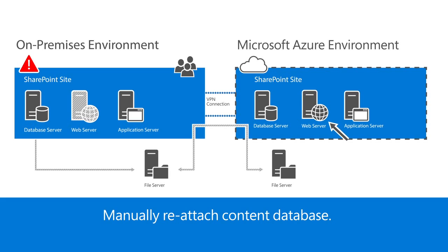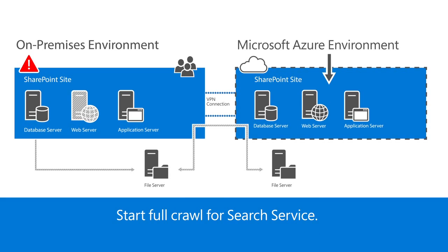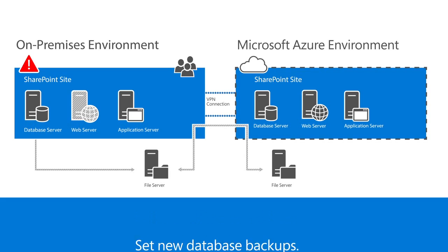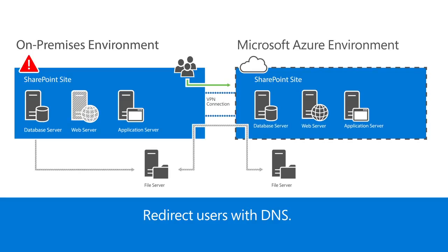Manually attach the SharePoint database to your web application, which causes SharePoint to recognize the restored site. Start a full crawl on each content source to update the search service. Set backups for the new SQL database so you have all the data needed to switch back to the on-premises environment later. And finally, point your DNS entries to Azure, which redirects users to the newly restored SharePoint site. At this point, your users can continue to work while you resolve the original problem in the on-premises environment.